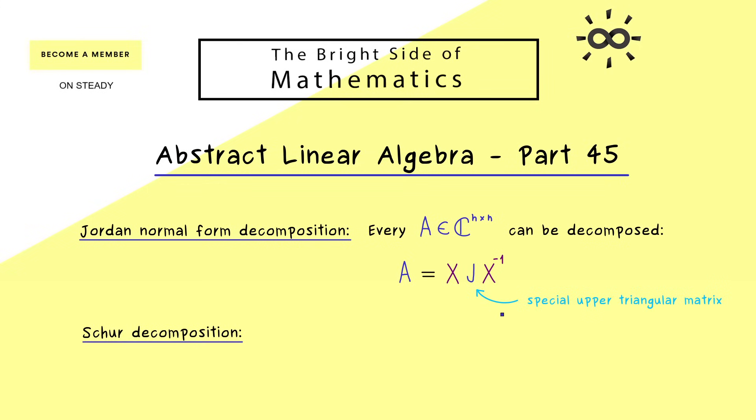However, there we don't have a special form anymore, we just have any upper triangular matrix in the middle. And there you might already guess, the catch is that the matrix X gets better in this case of the Schur decomposition. In fact, in the case of the Schur decomposition, X is not just an invertible matrix, but also unitary. And therefore the common name for this matrix is U. And instead of U inverse, we can write U star. And usually the upper triangular matrix in the middle is denoted by capital R.